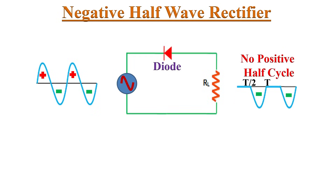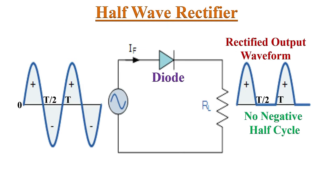If the diode in the half-wave rectifier is reversed, during the negative half-cycle the diode conducts current and during positive half-cycles it blocks current flow. As a result, negative half-cycles will appear at the output. In this way we can construct a negative half-wave rectifier.